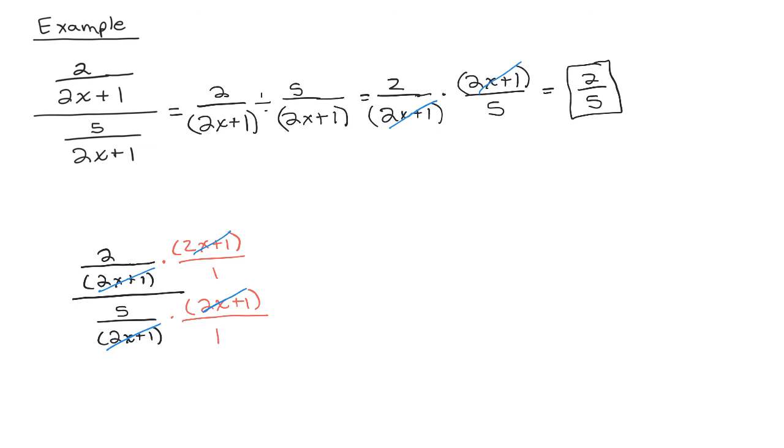So what do we end up with here? I end up with just a 2 over 1, which is of course a 2, and it's not a fraction anymore in the numerator and only a 5 in the denominator. So our answer is 2 over 5. Either way we do it.